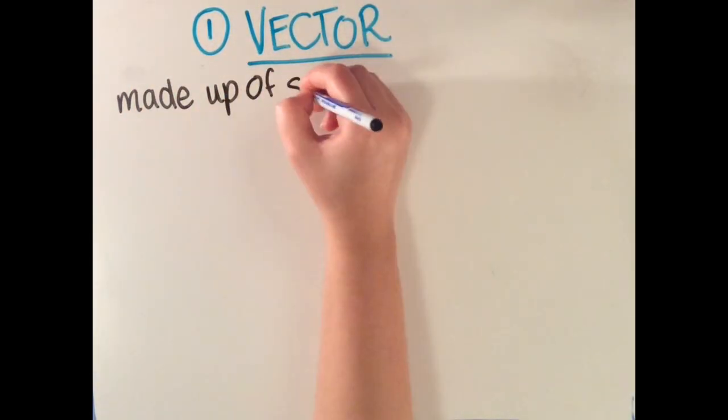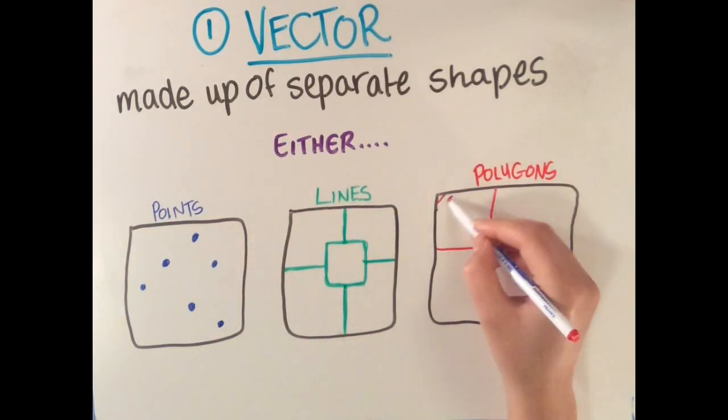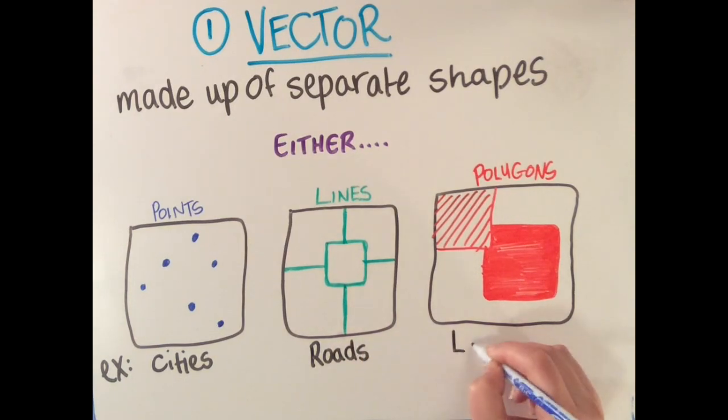Vector data comes in a layer that is made up of specific discontinuous shapes. They can either be points, lines, or polygons. Each individual shape represents a unique piece of data. Vector data is generally used to represent phenomena that doesn't continue across the entire space. Point data is often used to represent cities, line data is often used to represent roads, and polygons are often used to represent swaths of different land cover types.